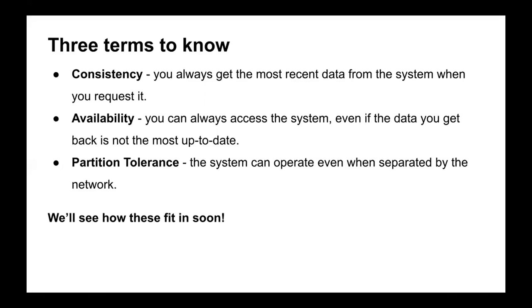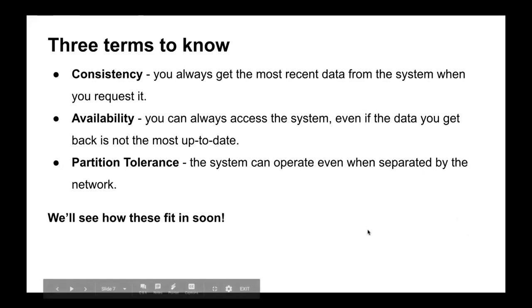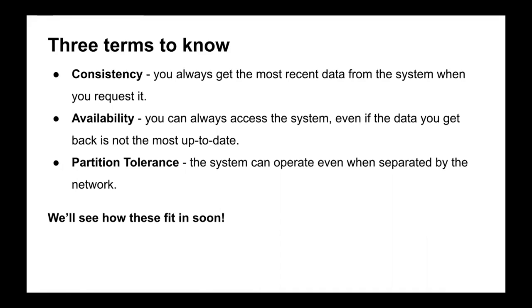Before we get into our overview, there are three terms I wanted to touch on first — the core pillars of distributed systems. I'm going to mention them again and again in the talk, kind of like the circular learning we have at launch school. The three terms are: consistency, availability, and partition tolerance. A consistent system is where you always get the most recent data from the system when you request it. Availability is when you can always access the system, even if the data you get isn't the most up to date. And partition tolerance is that a system can operate when it's separated by the network.